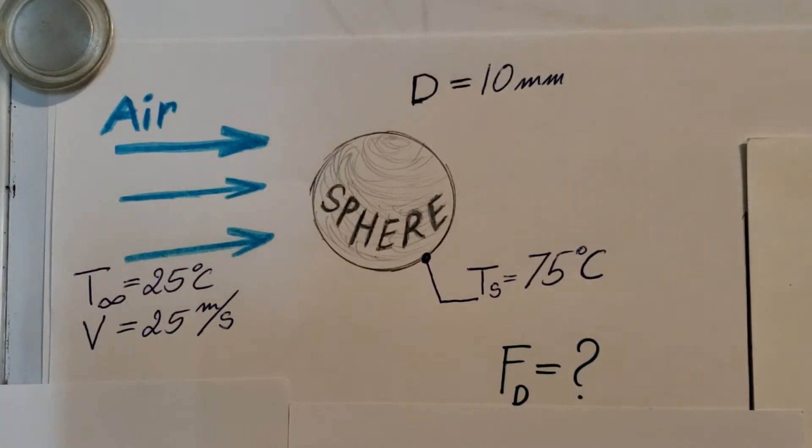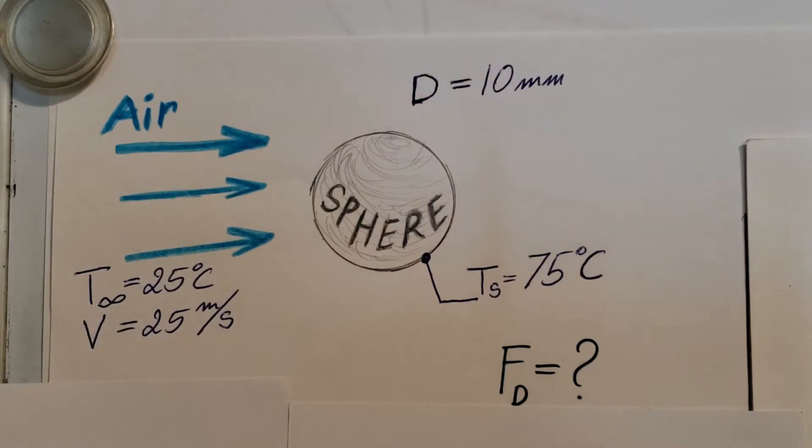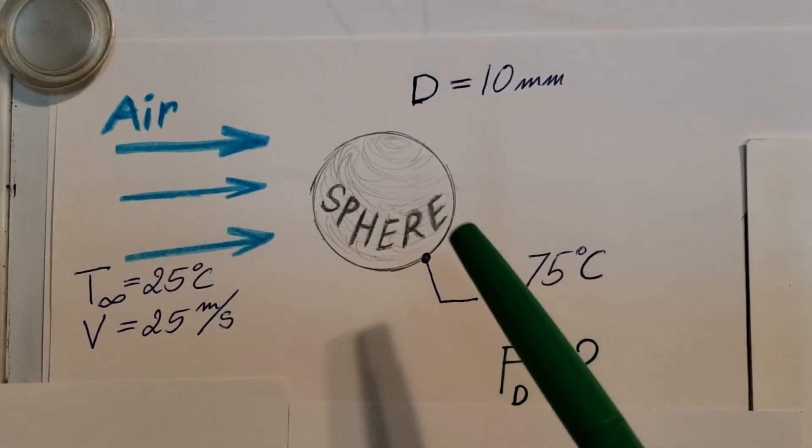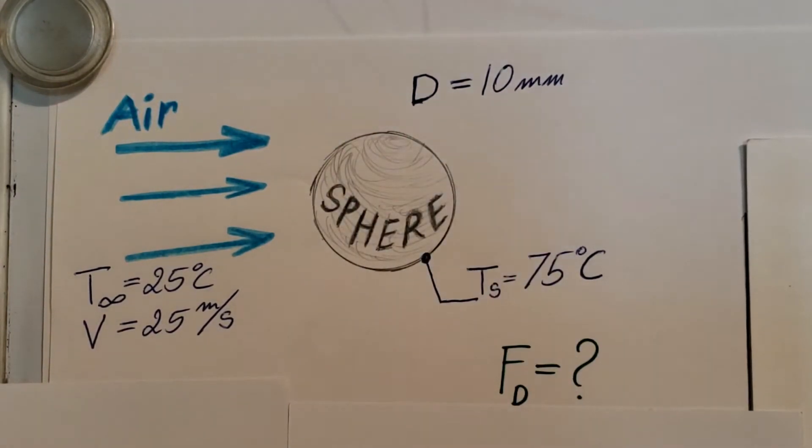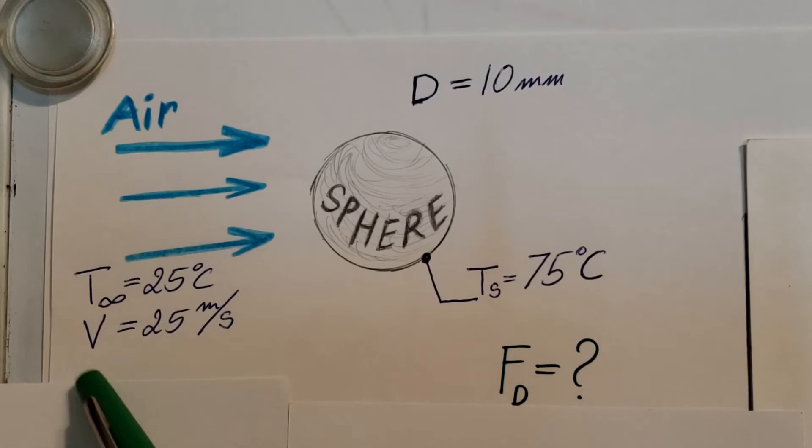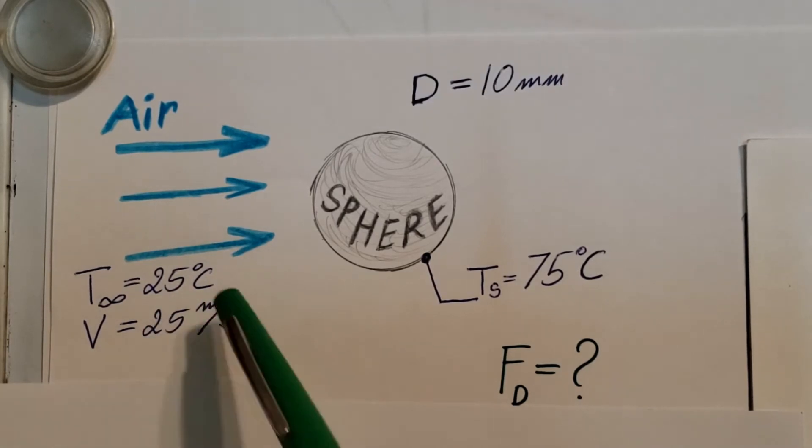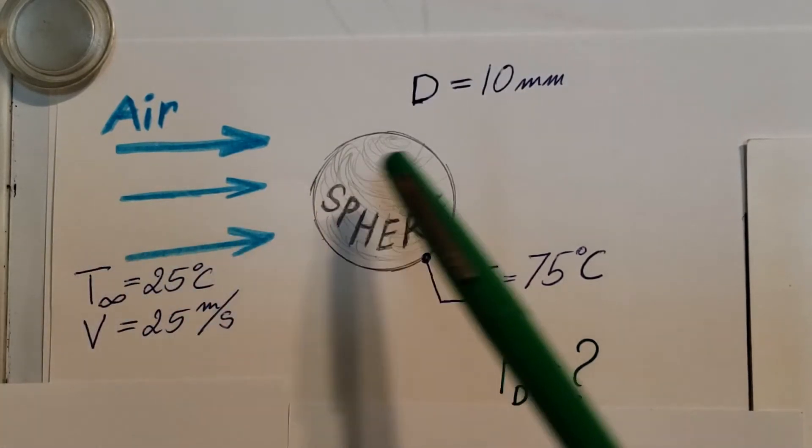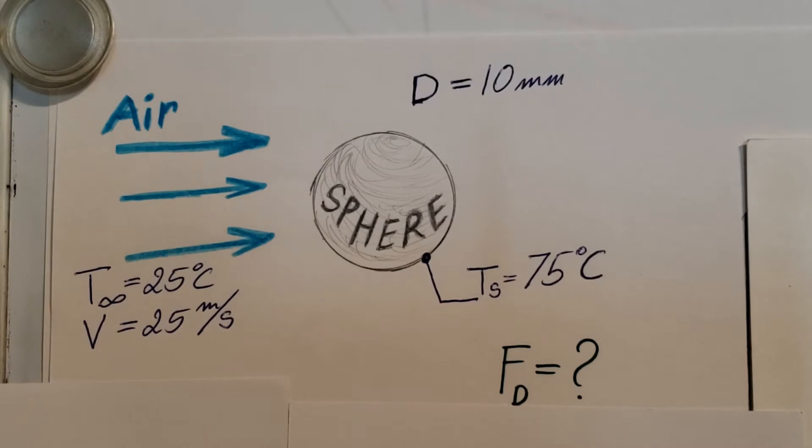Alright, let's work on this heat transfer problem. Here we have a sphere with a diameter of 10 millimeters. We have air at a temperature of 25 degrees Celsius with a velocity of 25 meters per second blowing over it.